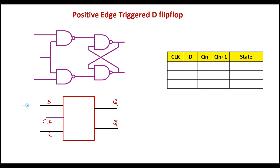So this is the S input, and the complement of S can be obtained by passing the signal S through an inverter. I will implement the inverter using a NAND gate. The output of this is connected to R input. This input is nothing but D input. So I have modified the SR flip-flop to a D flip-flop — just take the complement of S and connect the output to R input. This is nothing but a D flip-flop.